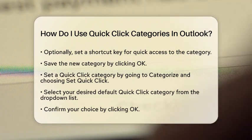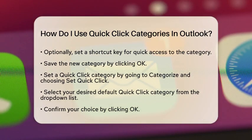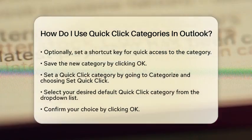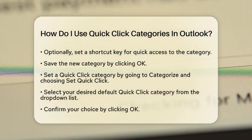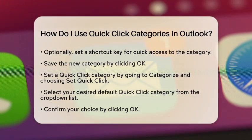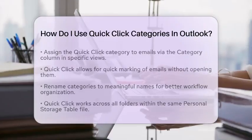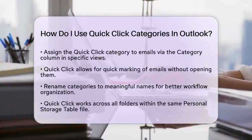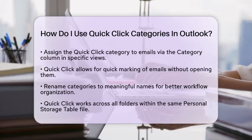With your Quick Click category set, you can start assigning it to emails. In certain views of Outlook, especially when the reading pane is off or below the message list, you will see a category column next to your emails. Simply click in the Category column for any email to assign the Quick Click category instantly. If you have an email open, you can also click Set Quick Click on the Categorize menu to apply your default category to future messages.